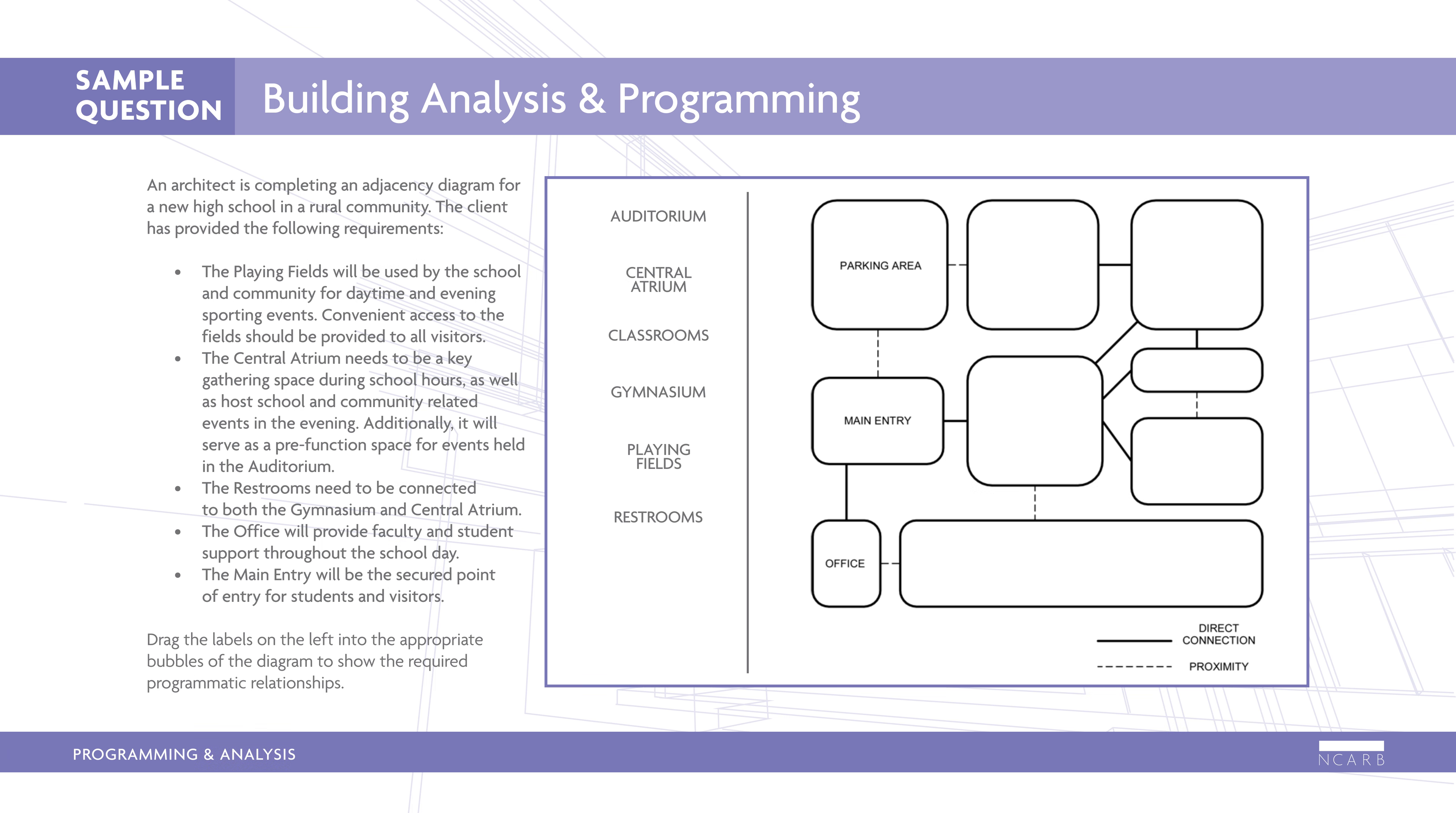An architect is completing an adjacency diagram for a new high school in a rural community. The client has provided the following requirements. The playing fields will be used by the school and community for daytime and evening sporting events. Convenient access to the fields should be provided to all visitors. The central atrium needs to be a key gathering space during school hours, as well as host school and community related events in the evening.